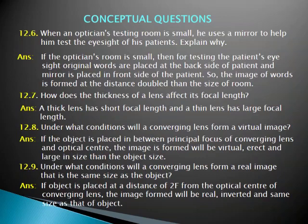Question 12.8: Under what conditions will a converging lens form a virtual image? A converging lens forms a virtual image when the object is placed between the principal focus of the converging lens and the optical center. In this case, the image is virtual, erect, and larger in size than the object.